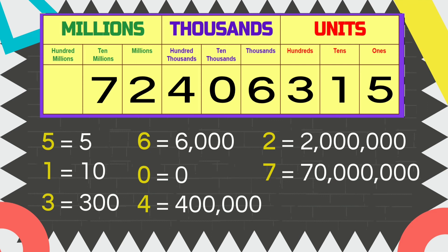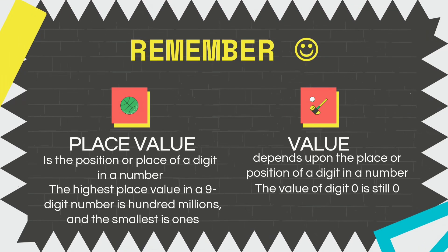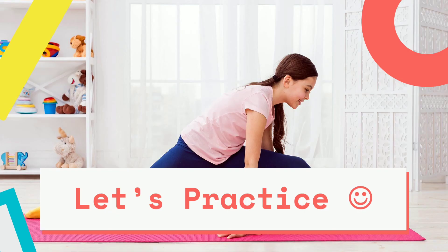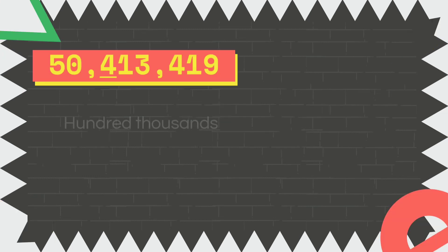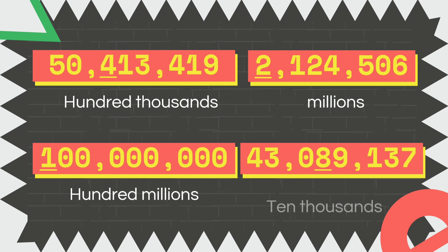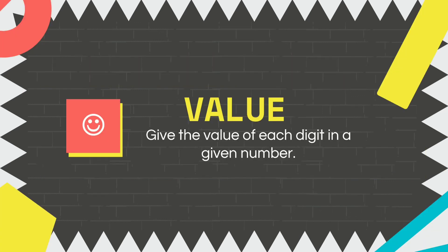Remember that place value is the position or place of a digit in a number. The highest place value in a nine-digit number is hundred millions, and the smallest is ones. Value depends upon the place value or position of a digit in a number. The value of digit zero is always zero. Let's practice — bring out your deal board and answer the following: identify the place value of the underlined digit in a number, then give the value of each digit in the given number.